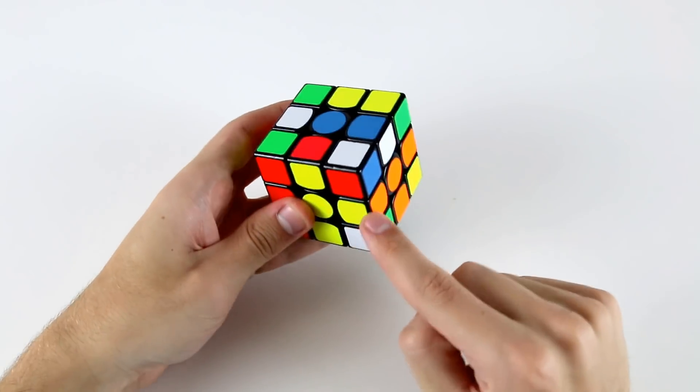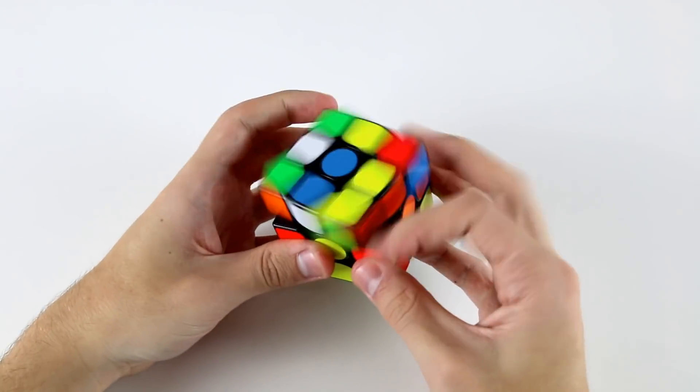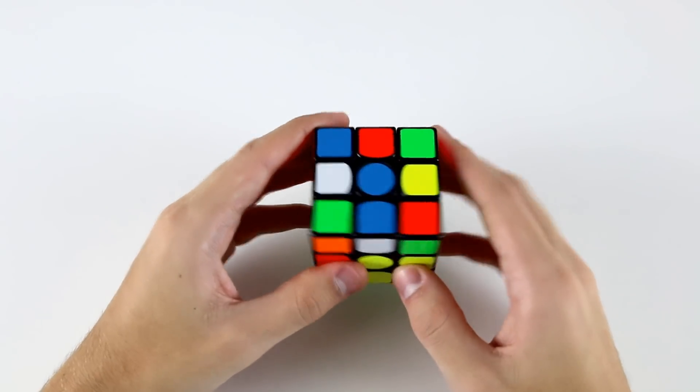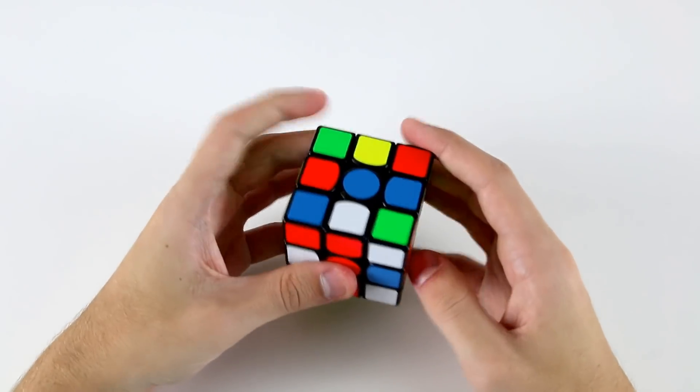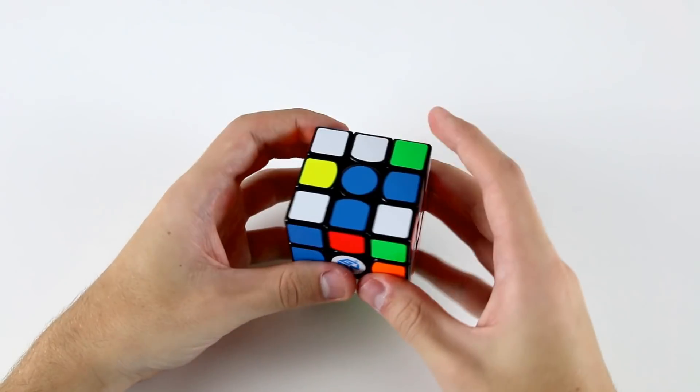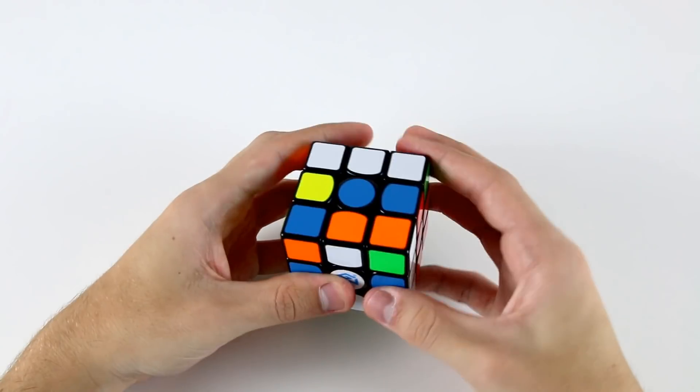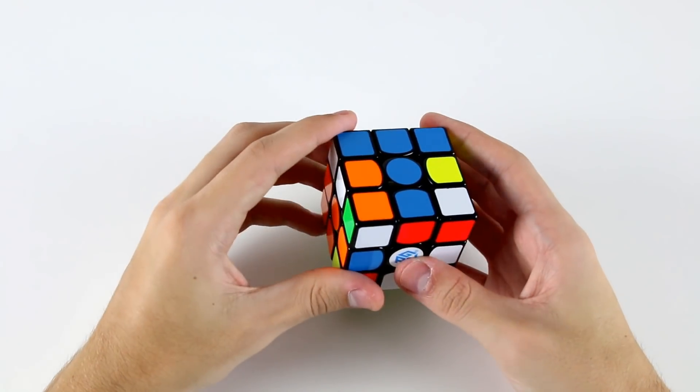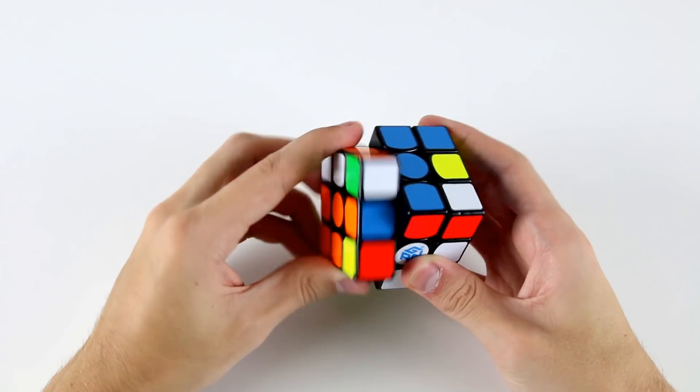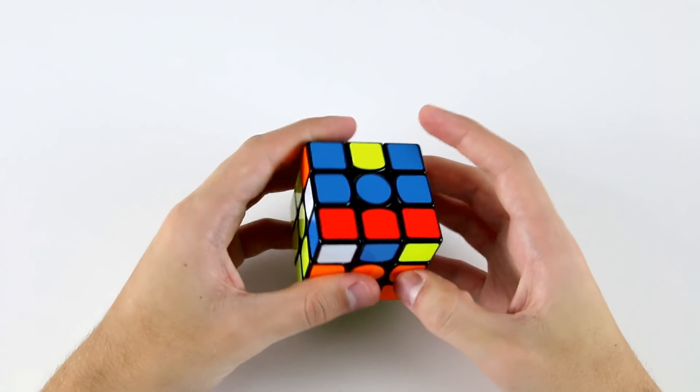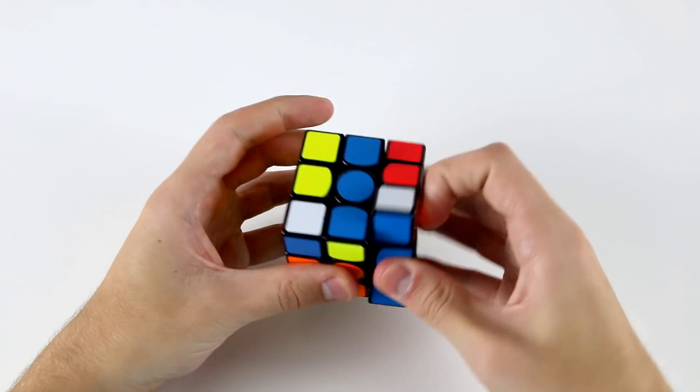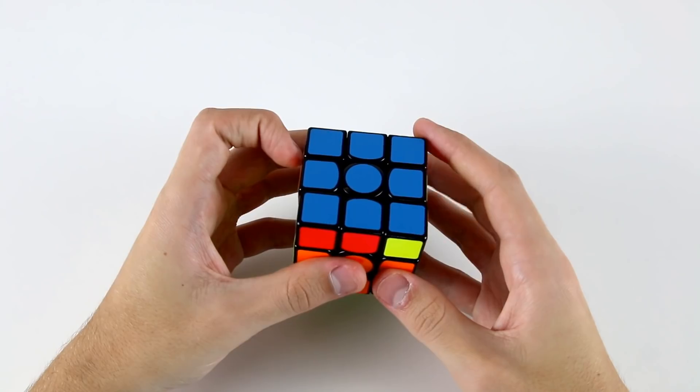For my first F2L pair I've got this edge and this corner which are very easy and I've got heaps of options here. I can do these two next, so I'll rotate, I'll do these two next, which again required a rotation. And this last one will also require a rotation. So I've got this case, which can be solved like this. Now I've got OLL and PLL.